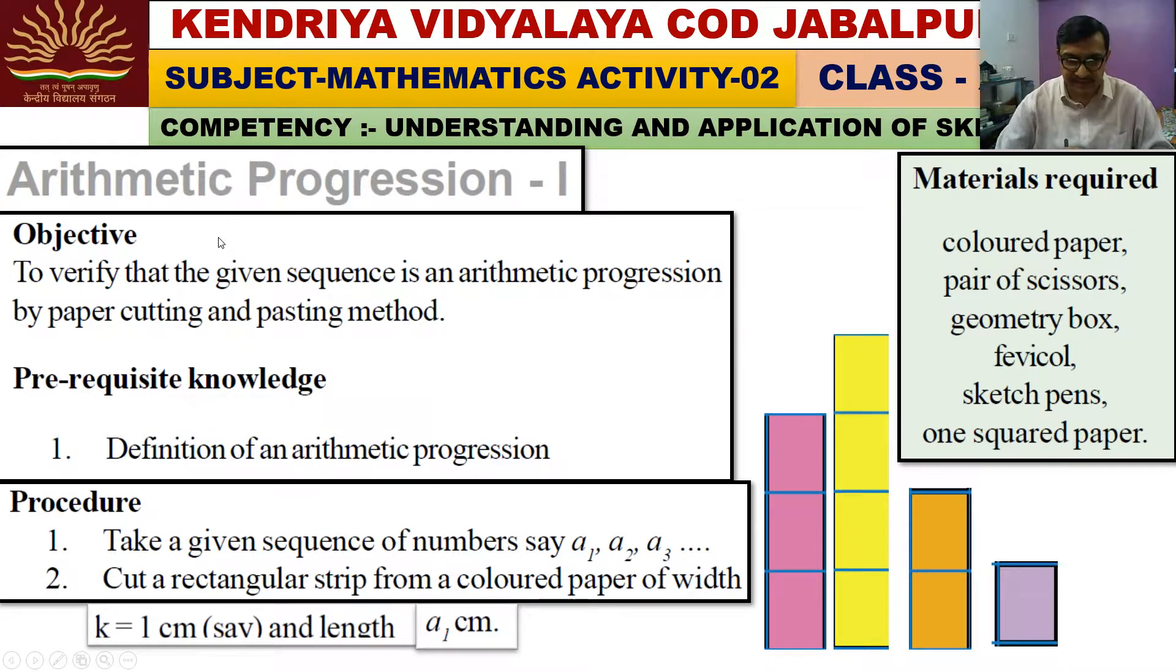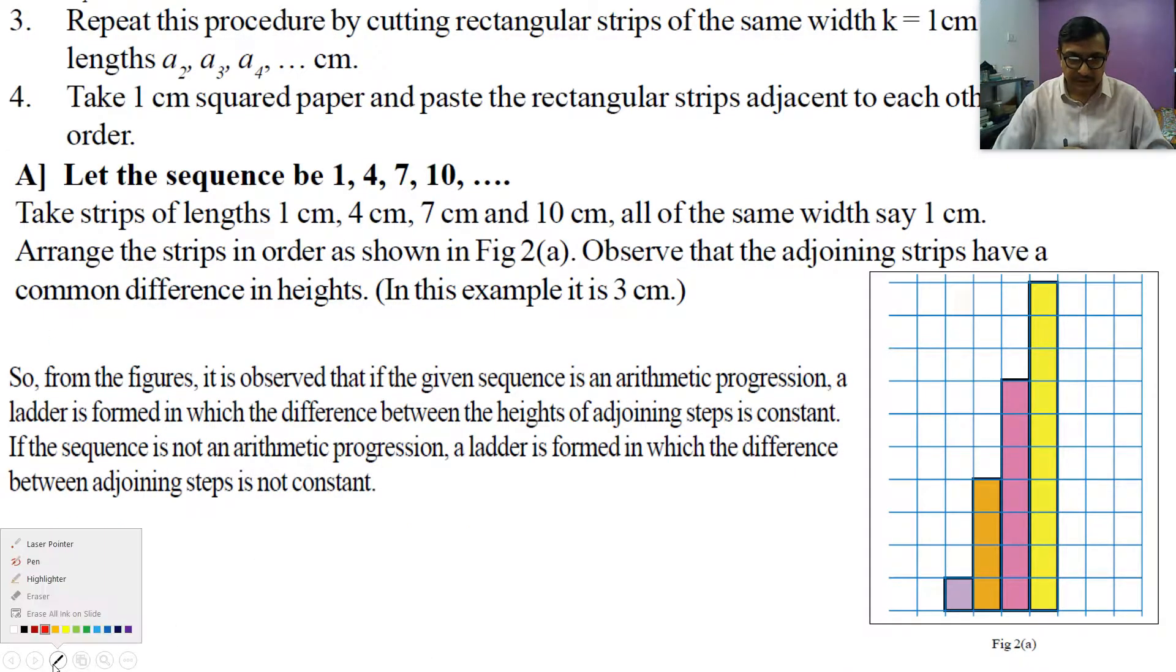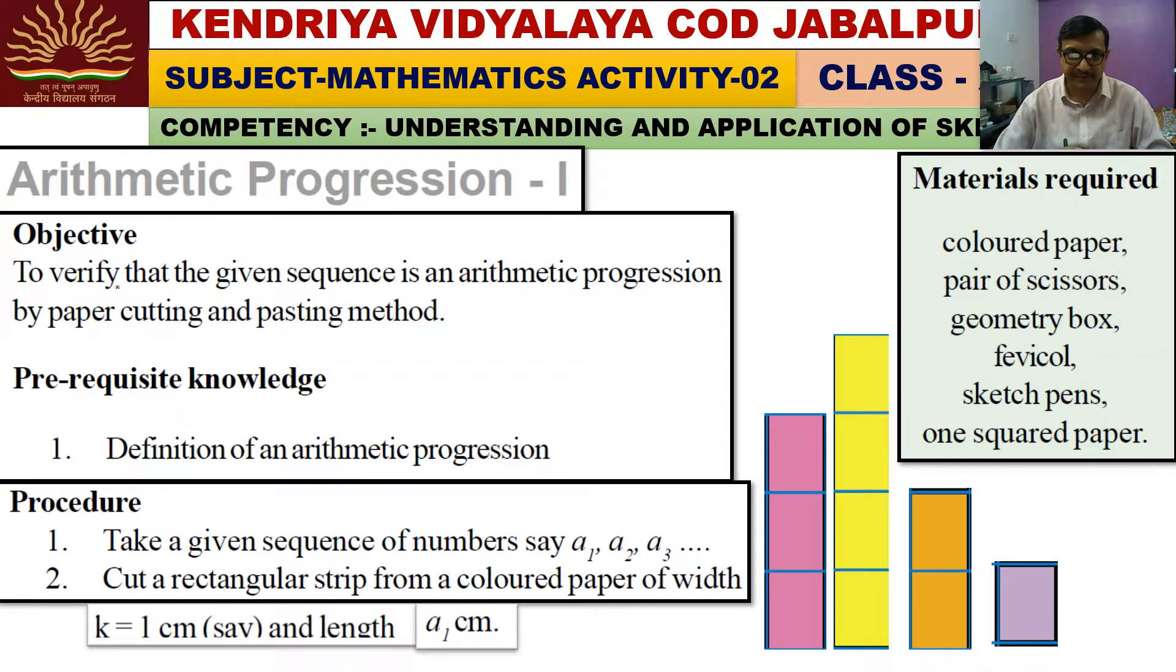The main objective of this activity is to verify that the given sequence is an arithmetic progression by paper cutting and pasting method. For this activity, we need some pre-requisite knowledge - we should know the definition of an arithmetic progression.